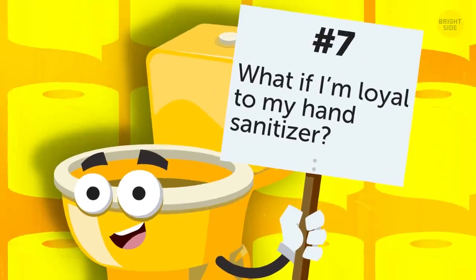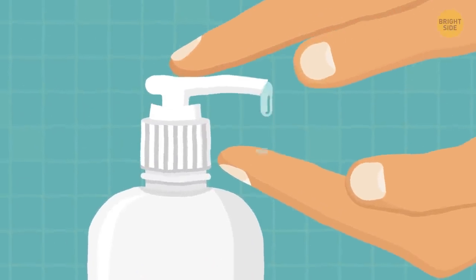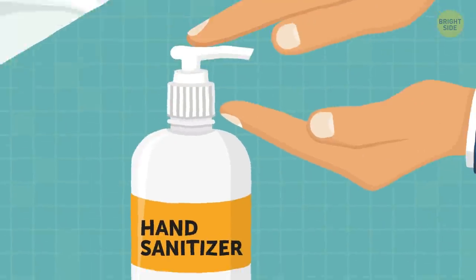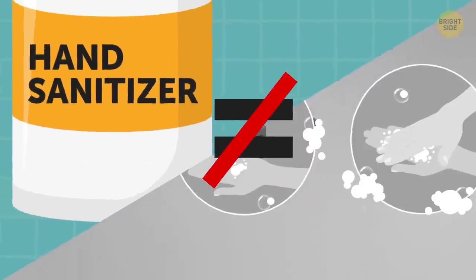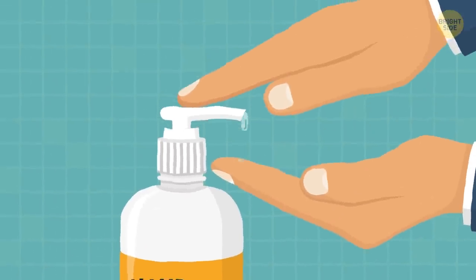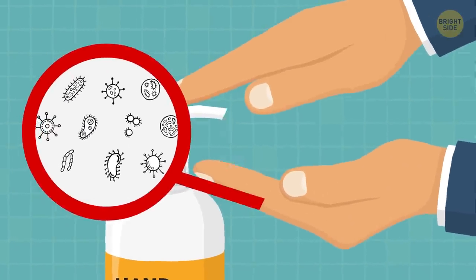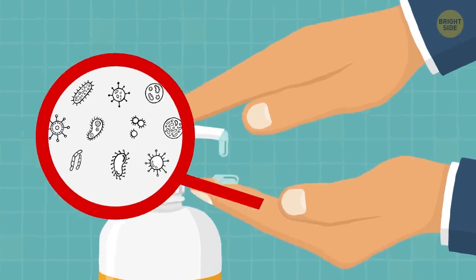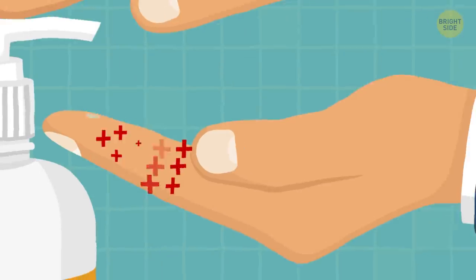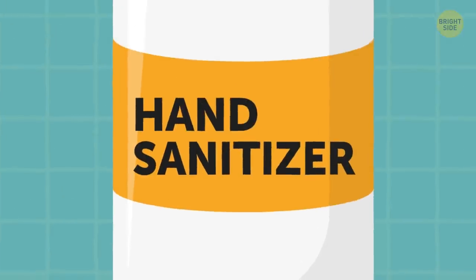What if I'm loyal to my hand sanitizer? It's definitely better than nothing if the sinks aren't working or if the soap has run out. But keep in mind that it's not as effective as washing your hands using the technique I just talked about. Make sure your hand sanitizer is at least 60% alcohol. Know that hand sanitizers don't get rid of all types of germs. It may also be unable to remove certain chemicals from your hands, like if you've been working with metals or pesticides, but it's never a bad idea to keep some on hand.